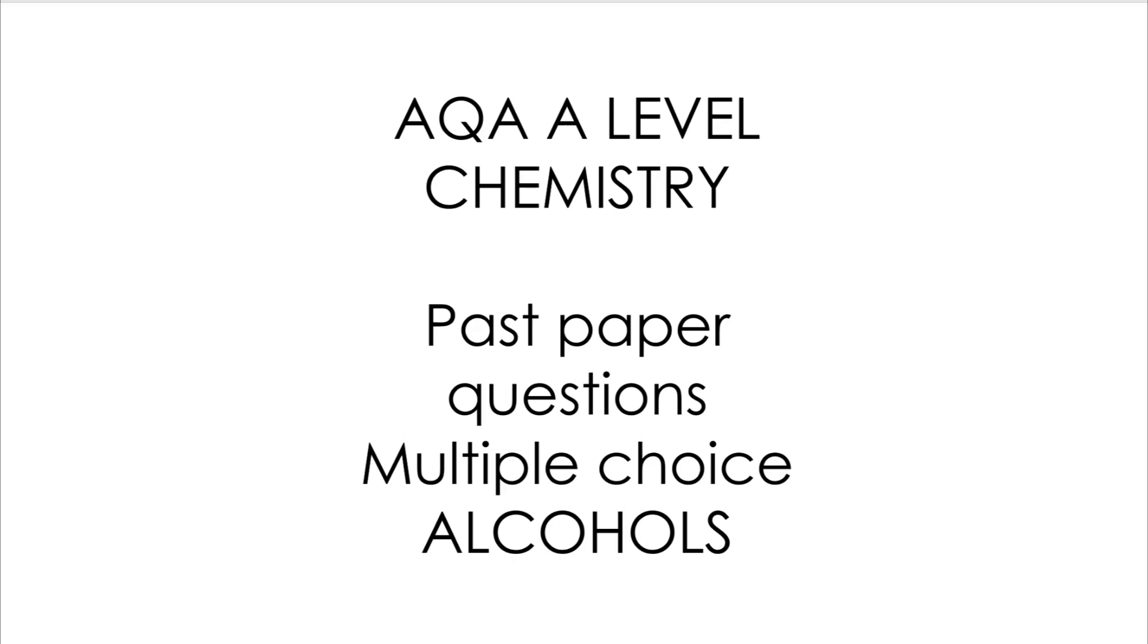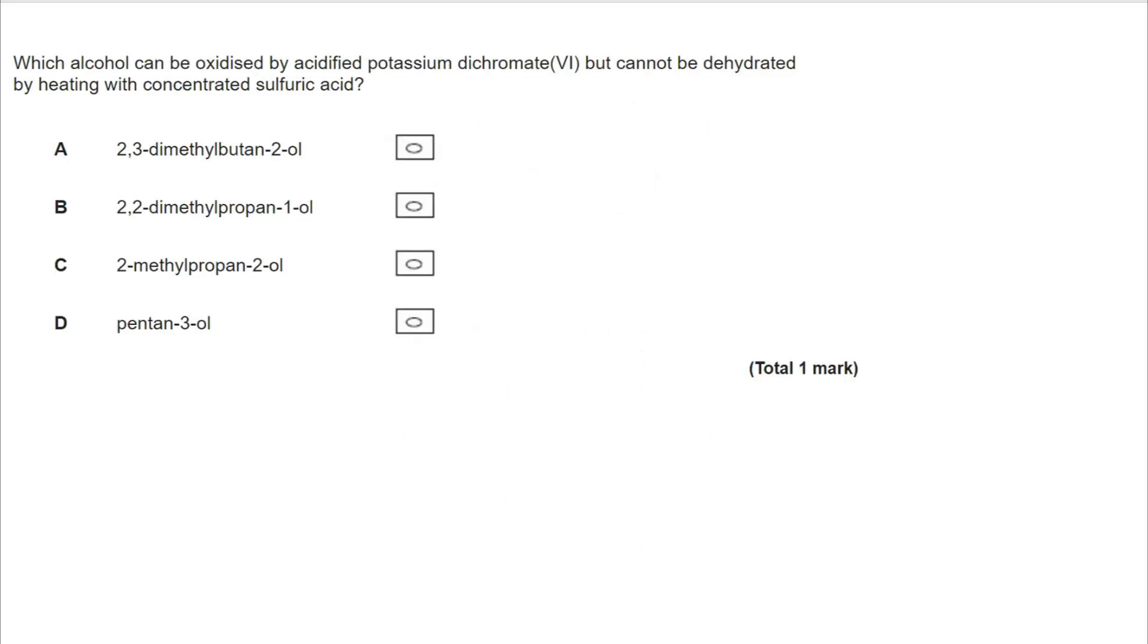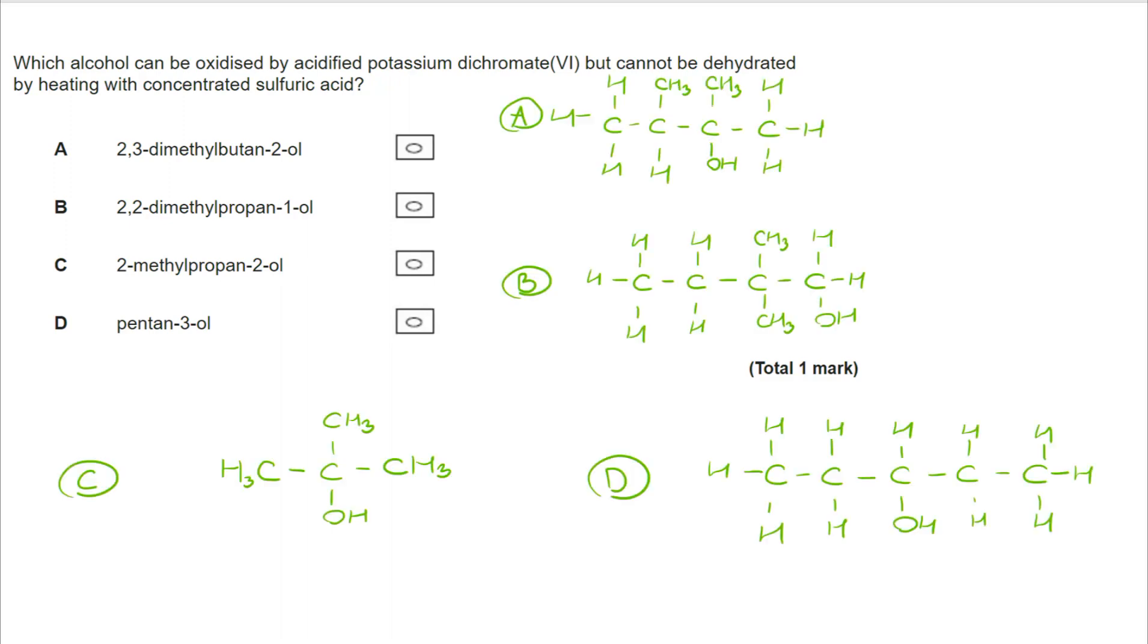Let's start with this question. Here we're looking for an alcohol that can be oxidized by acidified potassium dichromate 6, but cannot be dehydrated by heating with concentrated sulfuric acid. I'm going to start by drawing out the four structures, and from there I'm going to take it a step further forward and classify these alcohols.